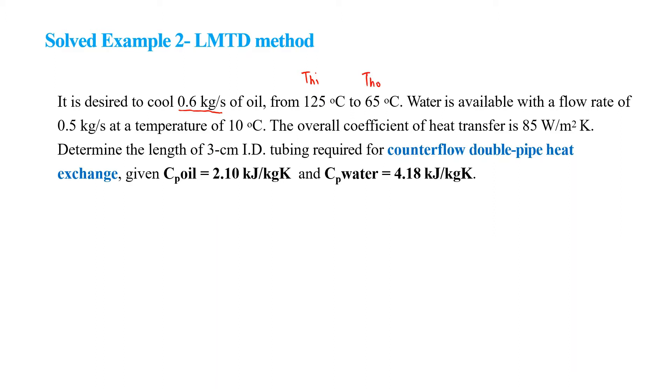Water is available with a flow rate of 0.5 kg per second at a temperature of 10 degrees Celsius. The overall coefficient of heat transfer is 85 Watt per square meter Kelvin. Determine the length of 3 cm diameter tubing required for counter flow double pipe heat exchanger.